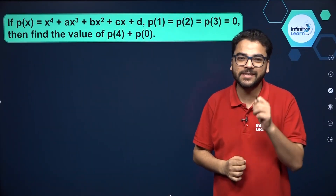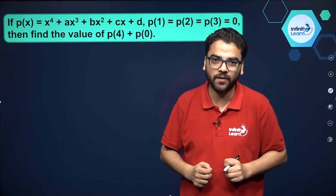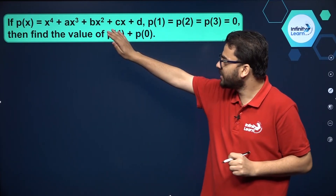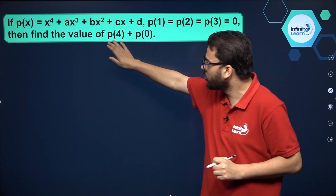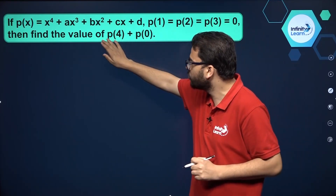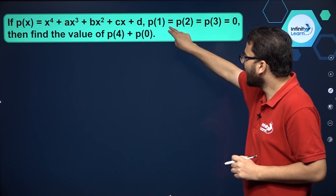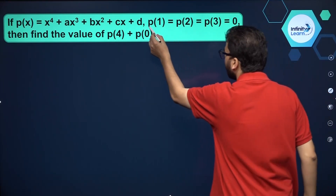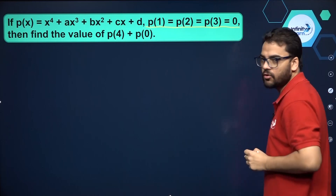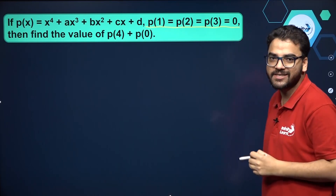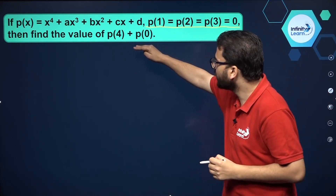Hello everybody. This is a good question on the very basic concept of polynomials. It is given to us that p of x is equal to x raised to the power 4 plus ax cubed plus bx squared plus cx plus d, and p of 1 is equal to p of 2 is equal to p of 3 is equal to 0. Then you have to find the value of p of 4 plus p of 0.